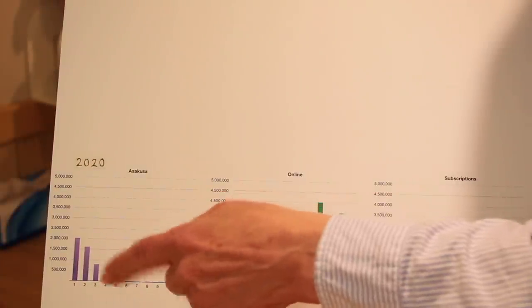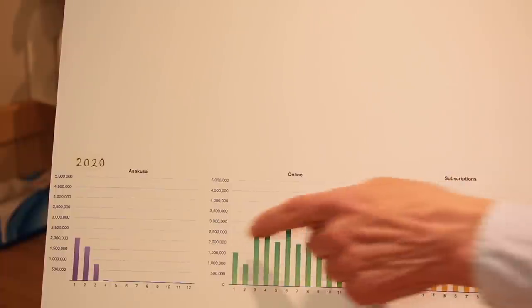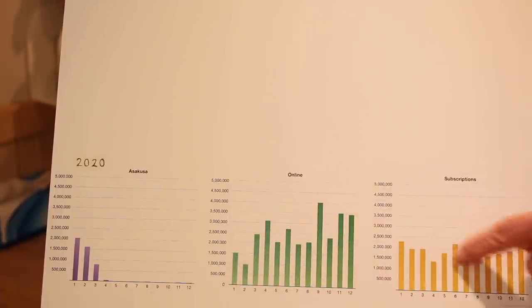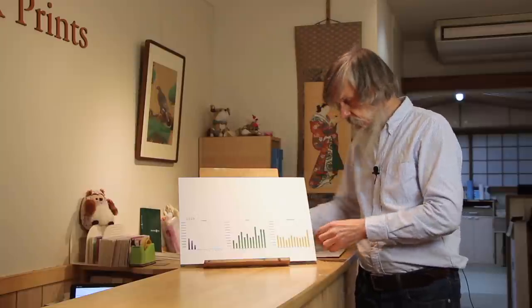After Asakusa, which is purple, faded out, the online revenue, the green part, picked up substantially. And that was supported by the subscriptions, the yellow numbers.